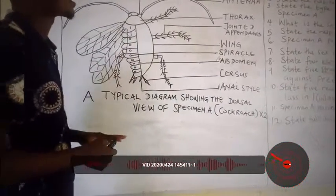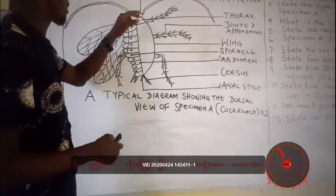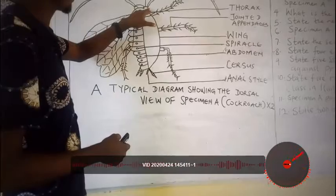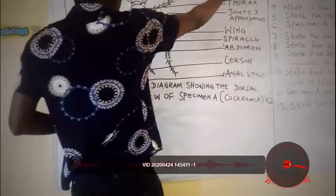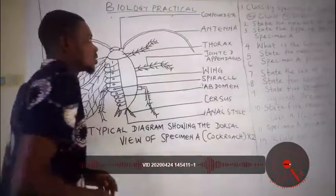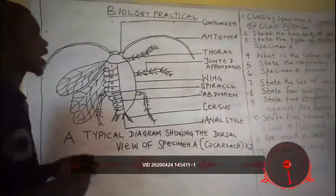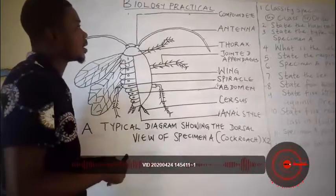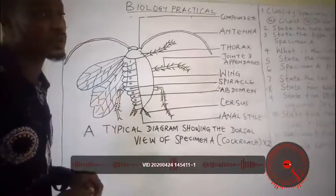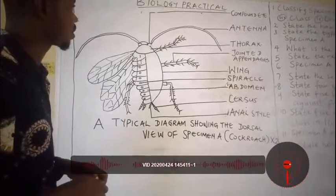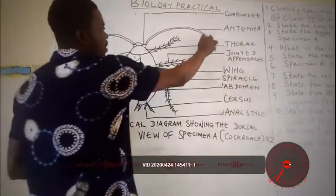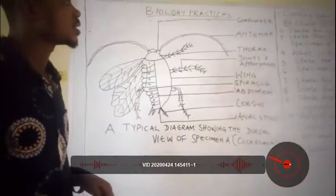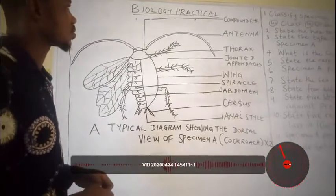First, the cockroach has compound eyes, which are used for wide vision, allowing the specimen to see predators so it can easily run away. Second, there is the presence of antennae, which are used for sensitivity to detect danger.